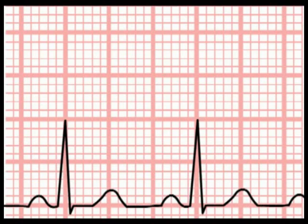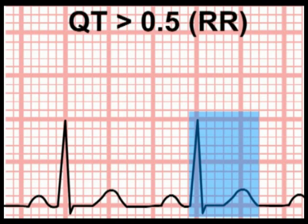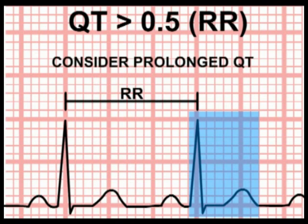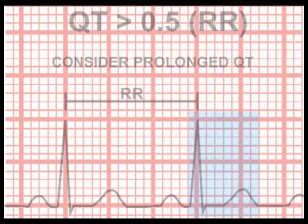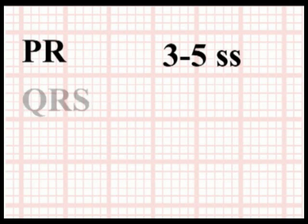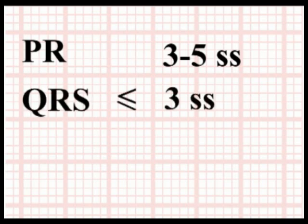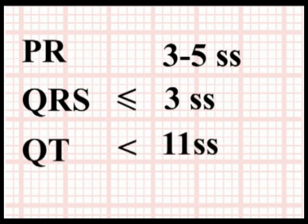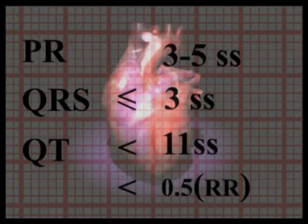As a simple rule of thumb, when you look at the rhythm strip on an ECG, if the observed QT interval is more than half the RR interval, at least consider the possibility of prolonged QT. Memorize these normal values: the PR interval — 3 to 5 small squares; the QRS complex duration — no more than 3 small squares; and the QT interval — less than 11 small squares at a heart rate of 60 beats per minute, and approximately less than half the RR interval at higher heart rates.